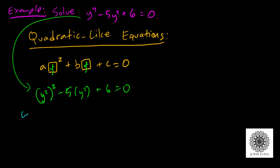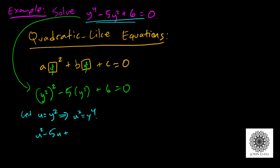Here's what I'm going to do: I'm going to let u equal y-squared. If that's the case, then I can rewrite my original equation. First, if u is y-squared, then u-squared is y to the fourth. So I can rewrite my original equation as u-squared minus 5u plus 6 equals 0. That is quadratic, and I know how to solve that.